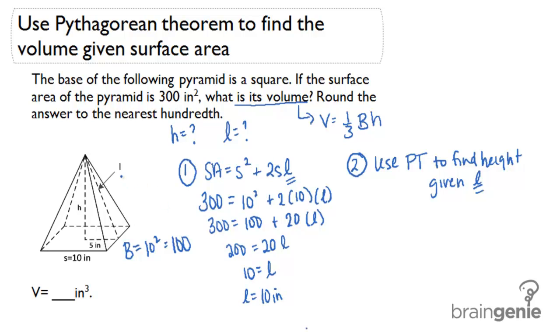I'm going to draw that into my picture. Now I'm going to use that slant height to follow step 2. Step 2 says I want to use Pythagorean theorem to solve for the regular height so I can plug the regular height into the volume formula.